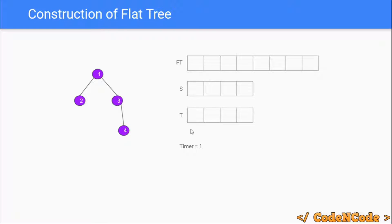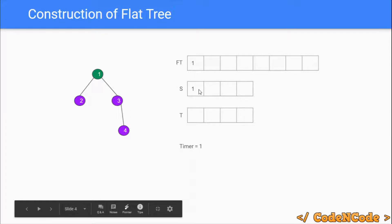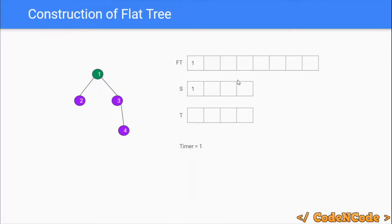Let me show you with an example using the timer, flat tree array, starting time, and terminating time arrays. The size of the flat array is twice the number of nodes in the tree, because each node is stored twice — once when you enter and once when you leave. We make a DFS call from main to node 1 (assumed root), reaching it at time 1. So starting time of node 1 is 1, and the timer acts as the index in the flat tree — at index 1 we store node 1.